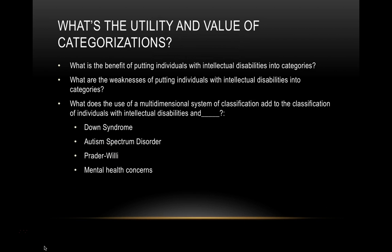Thinking about the value of categorization, consider what the use of a multidimensional classification system adds when there are specific etiologies — for example, intellectual disability with Down syndrome versus intellectual disability with autism spectrum disorder, or etiologies like Prader-Willi, or co-occurring mental health concerns. Support planning looks very different across these combinations, which is why the multidimensional framework is important — it looks at all areas of human functioning, strengths and weaknesses across each domain, helping with individualization.